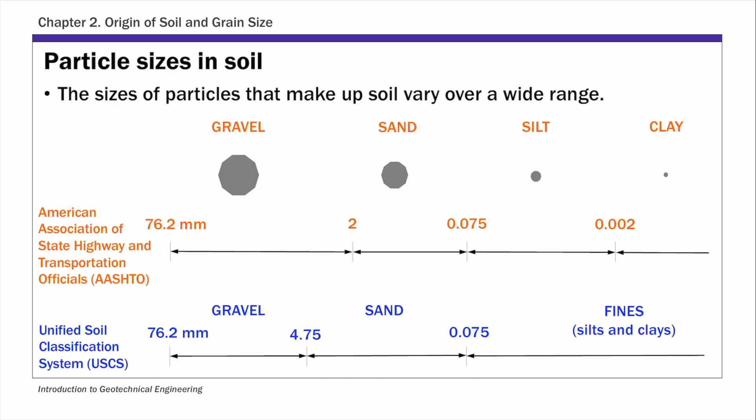Remember for USCS system, focus on this bottom here. Gravels are basically particles that have particle sizes between 76.2 and 4.75 millimeters. Sands are basically particles smaller than 4.75 and greater than 0.075 millimeters. And fines are smaller than 0.075. So these three values are the threshold values between different types of soils.